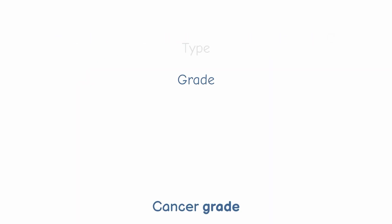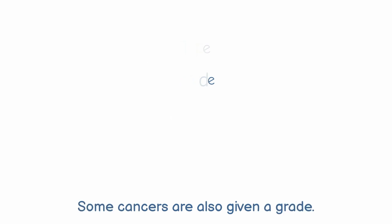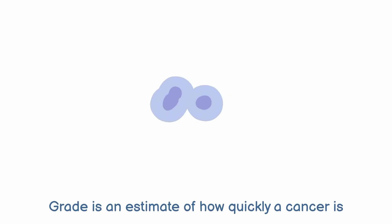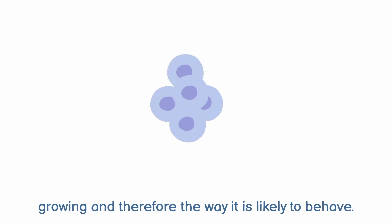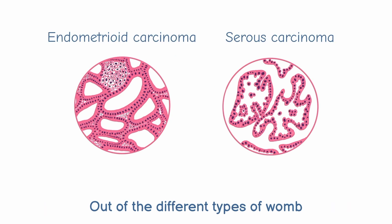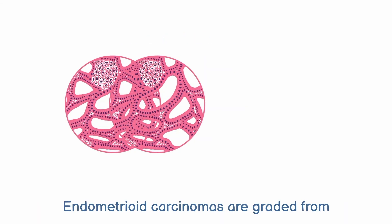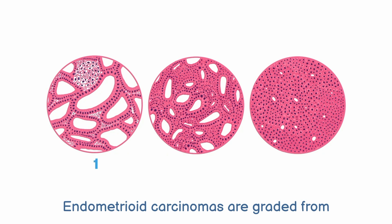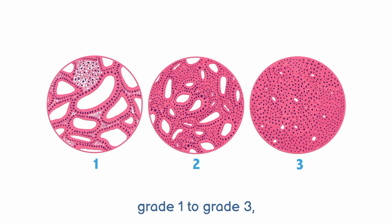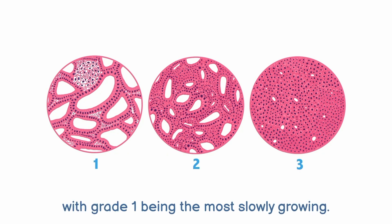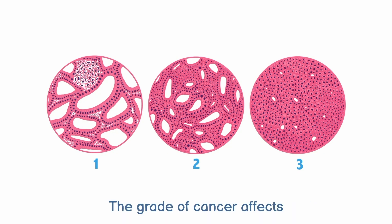Cancer grade. Some cancers are also given a grade. Grade is an estimate of how quickly a cancer is growing and therefore the way it is likely to behave. Out of the different types of womb cancer, only endometrioid carcinomas are given a grade. Endometrioid carcinomas are graded from grade 1 to grade 3, with grade 1 being the most slowly growing. The grade of cancer affects the treatment that is given.